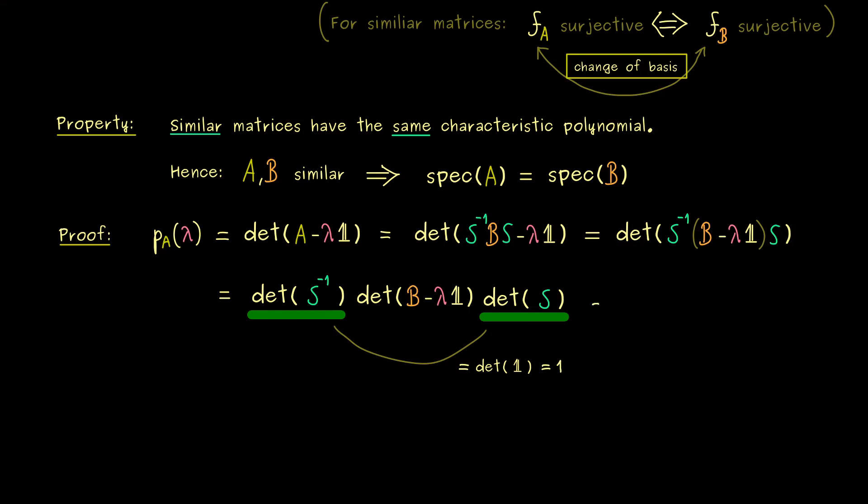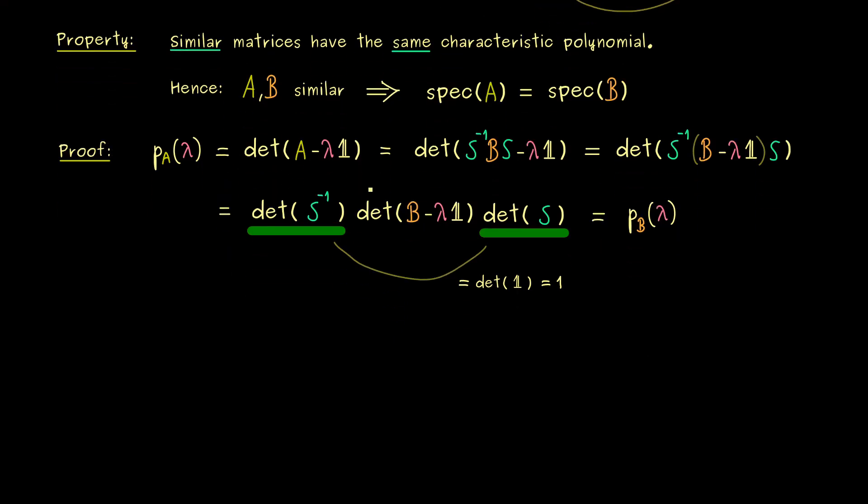In other words, only the characteristic polynomial of B remains on the right hand side, which is exactly what we wanted to show. Ok, and with that we now have the nice result, the eigenvalues of similar matrices are exactly the same.